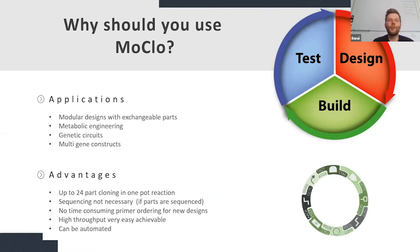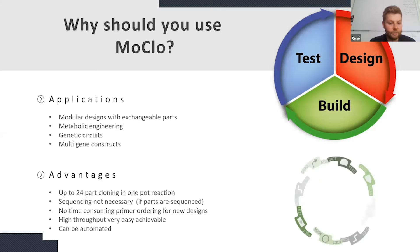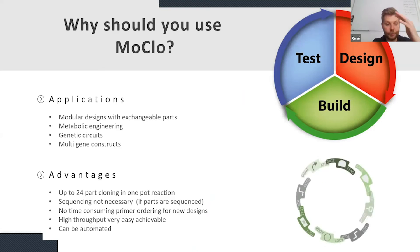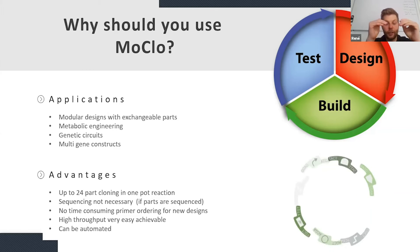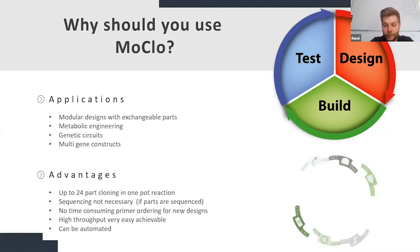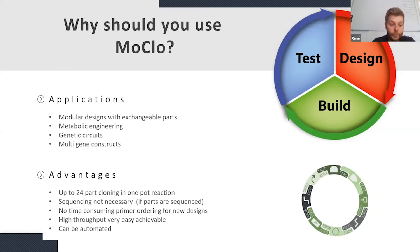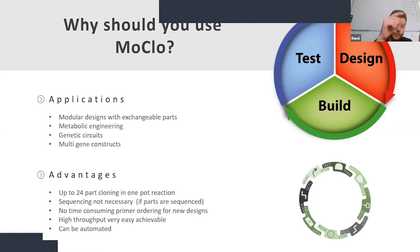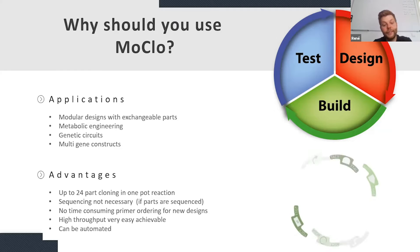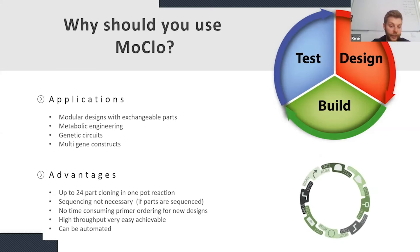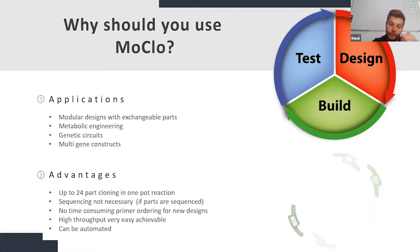In the case of Gibson, you don't have real parts and they are not as exchangeable as in MoCLO or GoldenGate. Especially if you have to adjust the expression level of many genes of interest in a metabolic engineering project or genetic circuit project, I would really recommend using this technique. People have already pushed this technique to assemblies of up to 24 parts in an efficient manner. Another advantage is that once you have created the small parts, it's not completely necessary to sequence them fully, because you already know that your part sequences are correct.